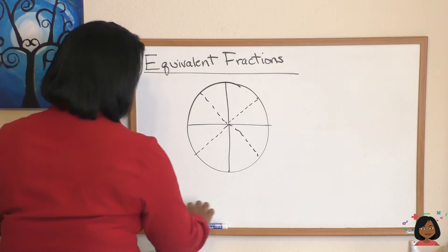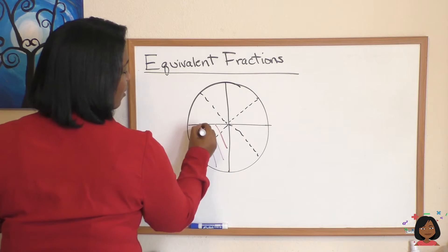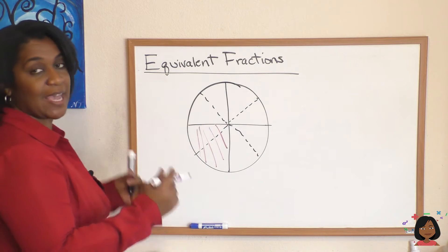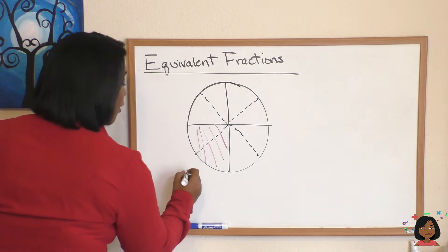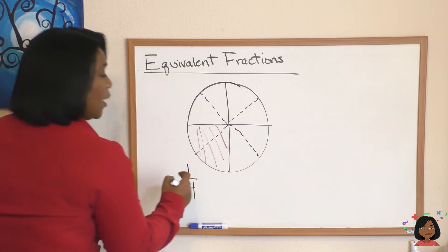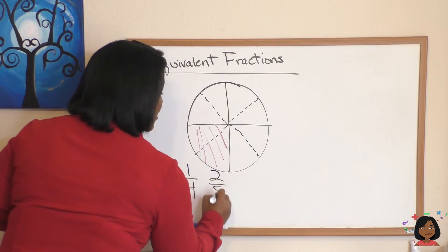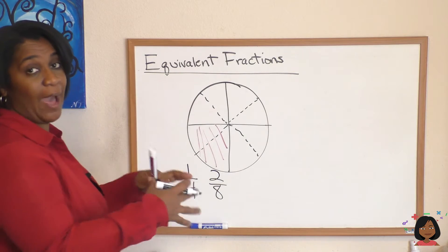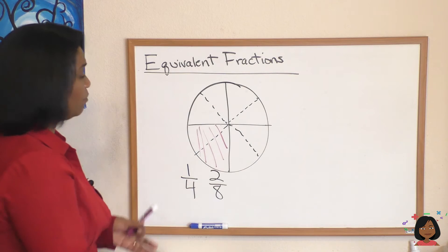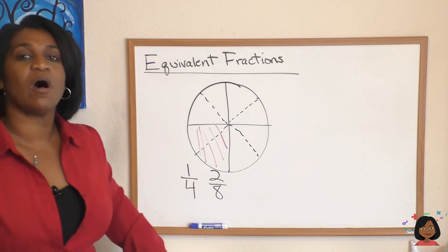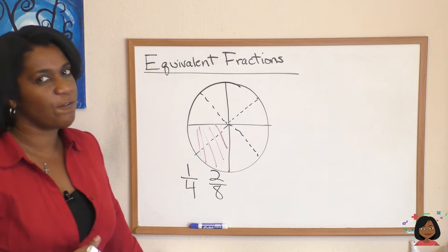Now notice the piece that I was going to have before—I was going to have this entire piece of pizza before. But that same section of pizza, you know, originally was called one-fourth, but now that same section of pizza is called two-eighths because it's two pieces now out of eight total, before it's one piece out of four total. But it's the same thing. These are what we call equivalent fractions.